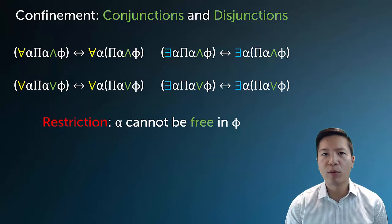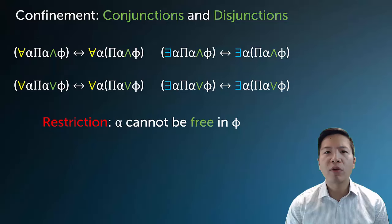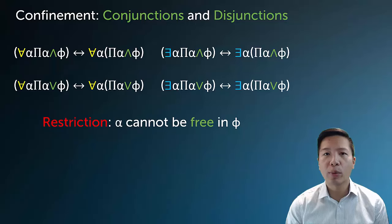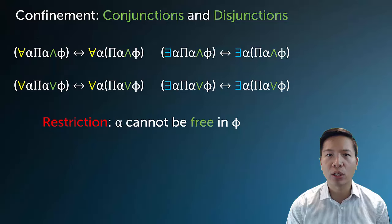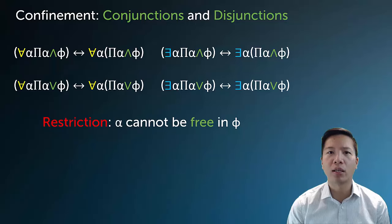Confinement rules address when you can extend the scope of a quantifier over a larger part of the sentence. Here are the confinement rules for conjunctions and disjunctions, both for the existential and the universal. For conjunctions and disjunctions, it's very straightforward — there are no problems. If a quantifier is only modifying one conjunct or disjunct, you can extend its scope over the entire conjunction or disjunction without issues. There is a classic restriction of containment: alpha cannot appear free in phi. You can revisit the universal derivation and existential generalization videos for rules about capturing and containment.